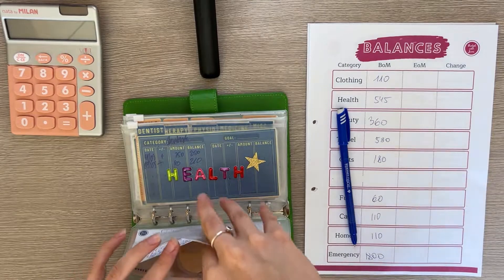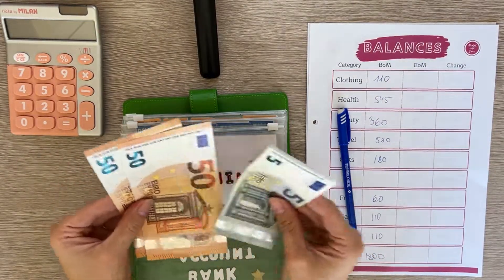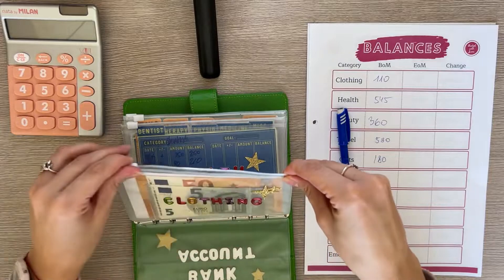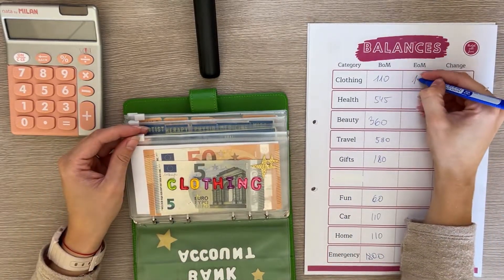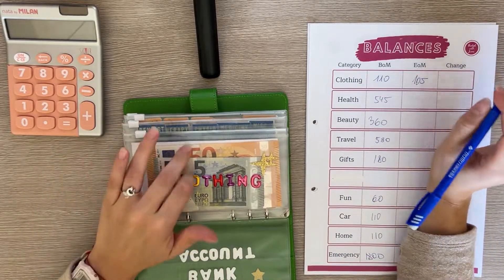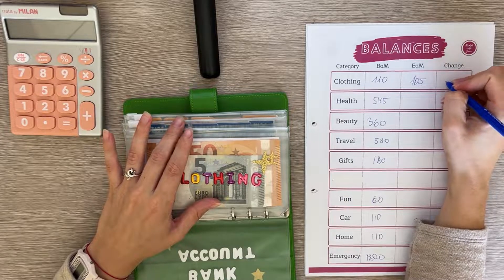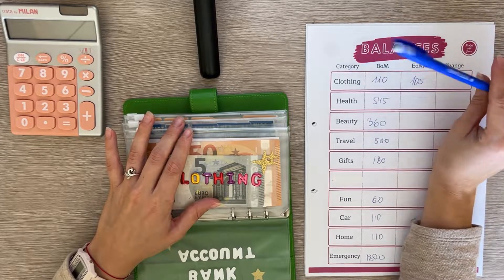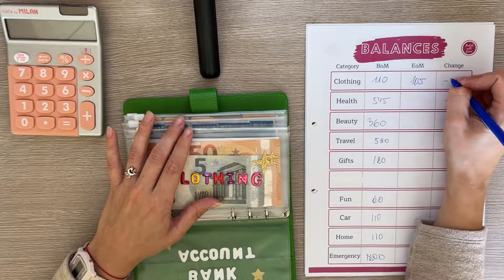Let me grab a pen and let's start with clothing. Clothing has $110. I did a cash condensing video recently so my envelopes are nice and thin and easy to count. It had $110 at the beginning so it's a minus five euro difference.